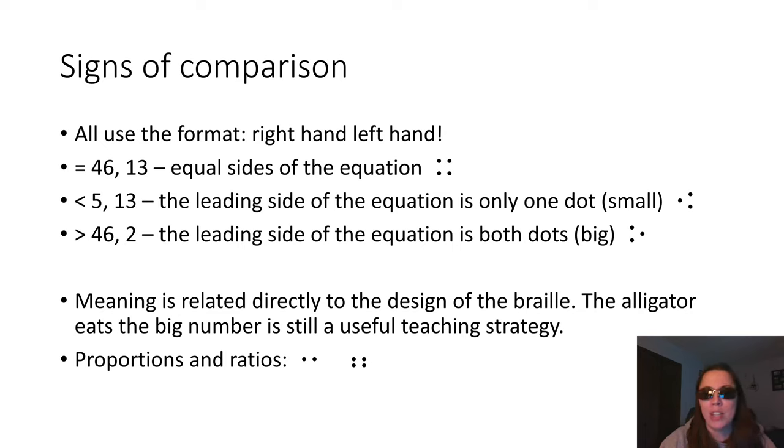When the two sides are equal, we mark them in braille with a two-celled sign of comparison. The two cells are dot 4, 6, then 1, 3. So this is not the letter X. This is two different cells. It's 4, 6 on your right hand, and then 1, 3 on your left hand.